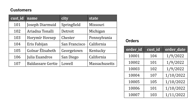We've also got keys. Like the customer ID — that's a key. It helps us uniquely identify information in the tables. A primary key, as you see here, in the customers table is the customer ID, and in the orders table it's the order ID. They help us uniquely identify those things.